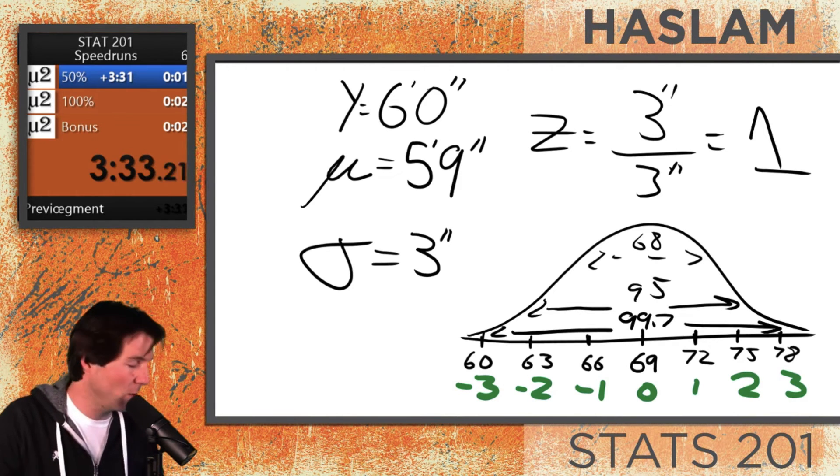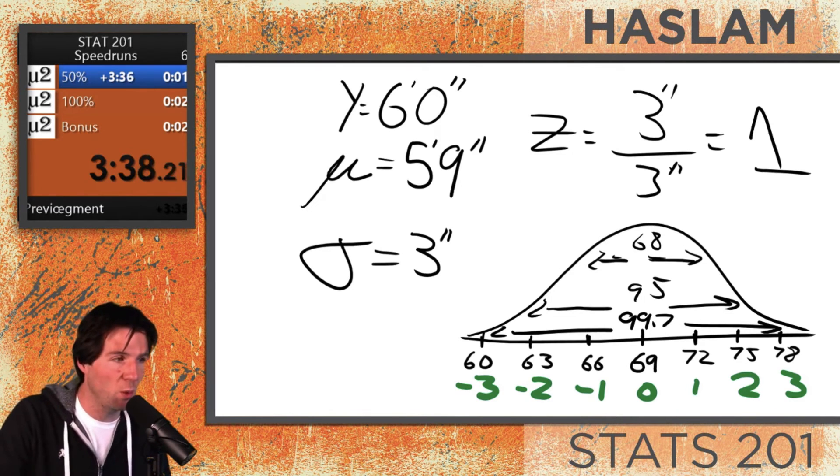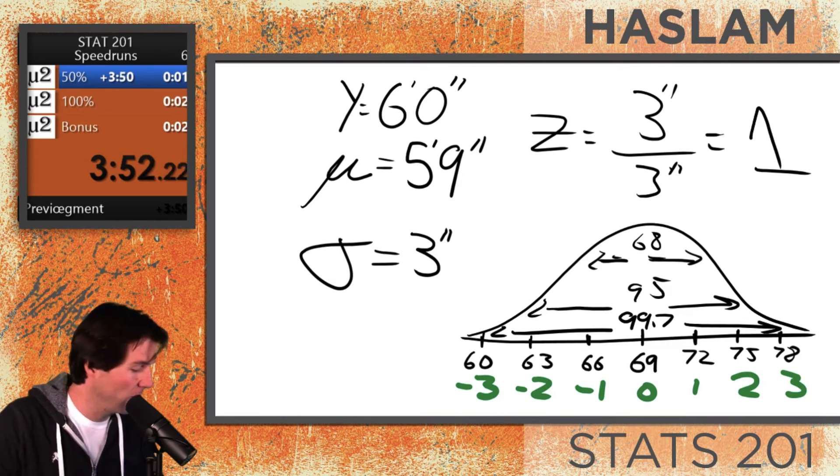And what does this mean? It means that 68% of guys would be expected to have a height between five foot six and six foot tall. 95% of guys would be expected to have a height between five foot three and six foot three. 99.7% of guys would be expected to have a height between five foot and six foot six.